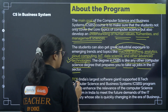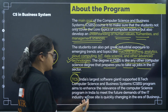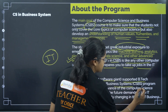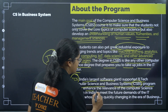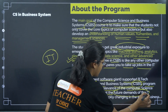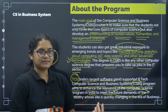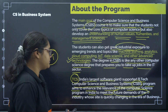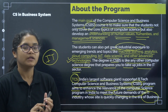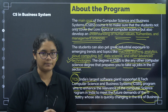This course was given by TCS — India's biggest software giant — which supported the BTech computer science and business system program. The CSBS program aims to enhance the relevance of the computer science program in India to meet future demands of the IT industry. In the future, companies need not only people who know computer science, but also people who can manage business — that is why this branch was developed.